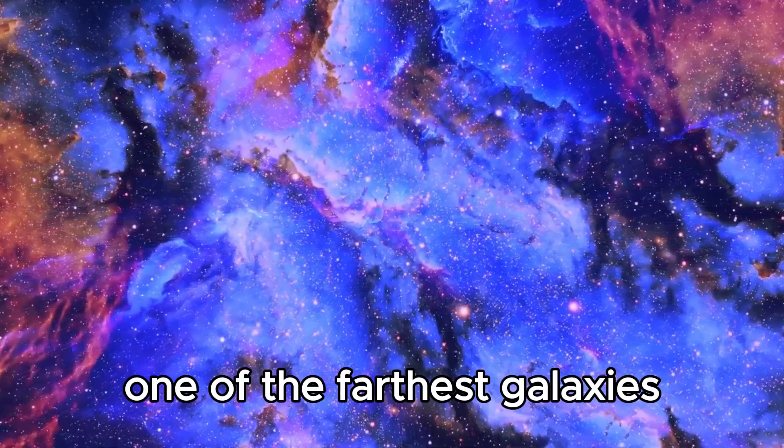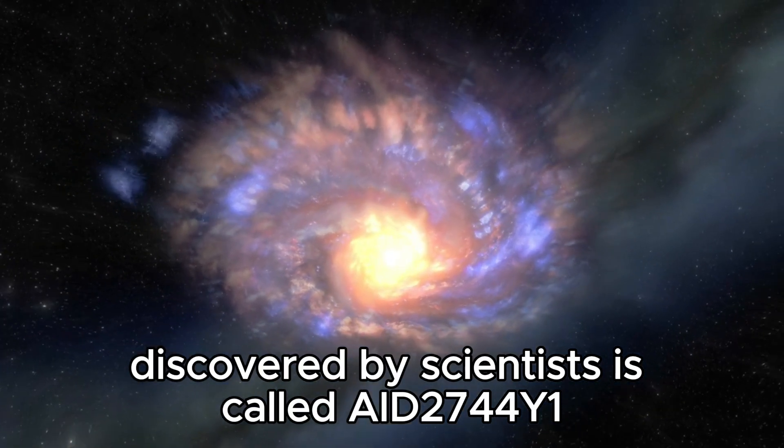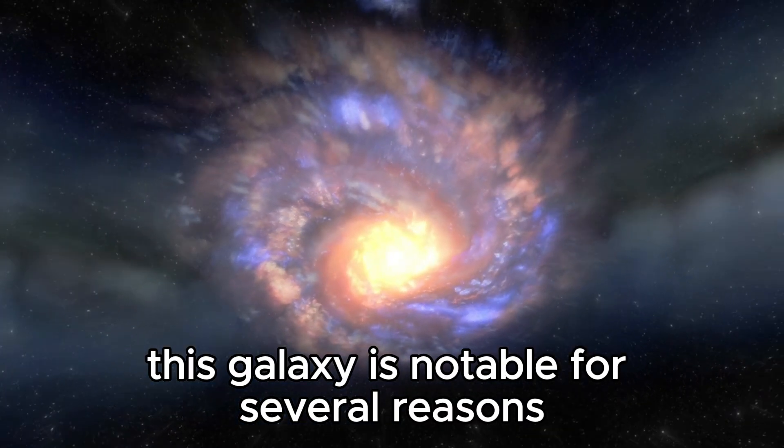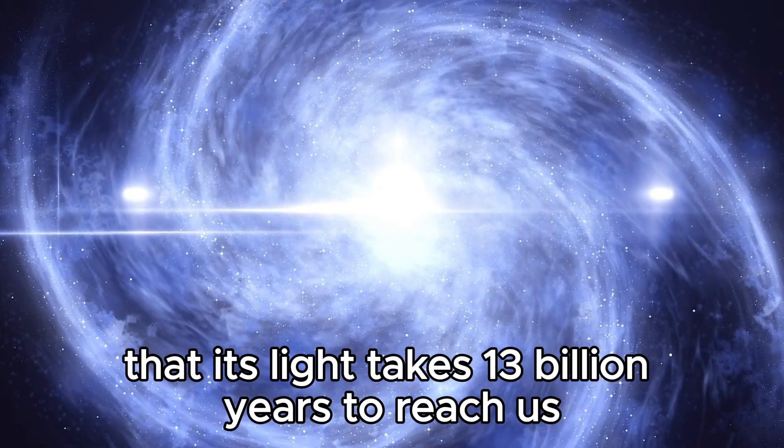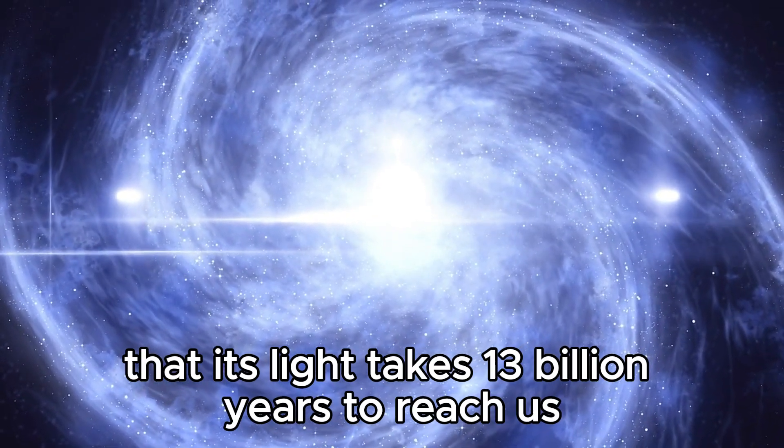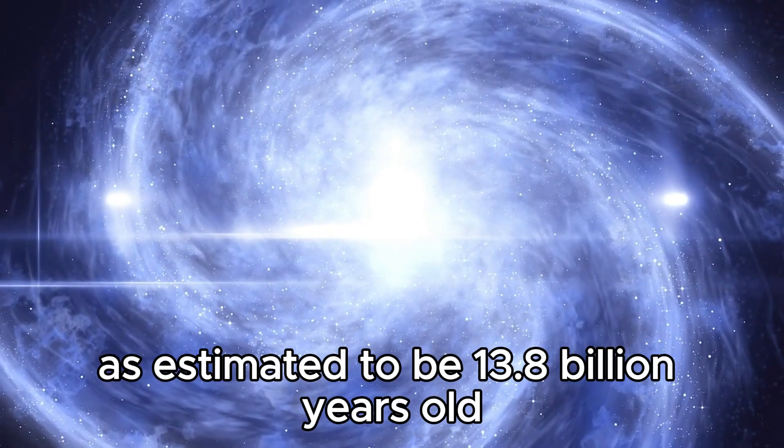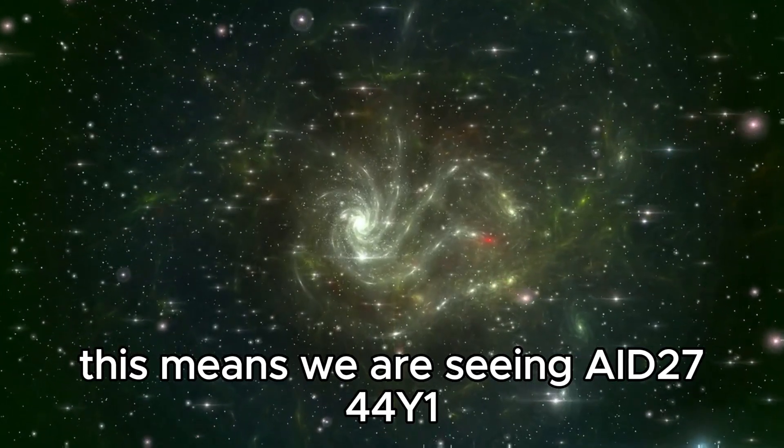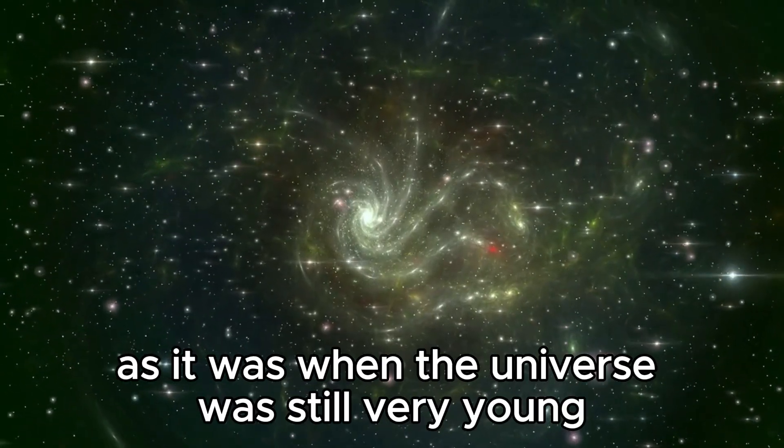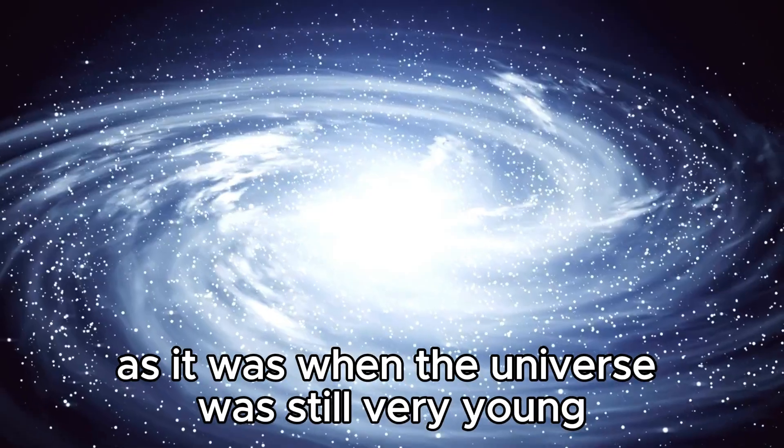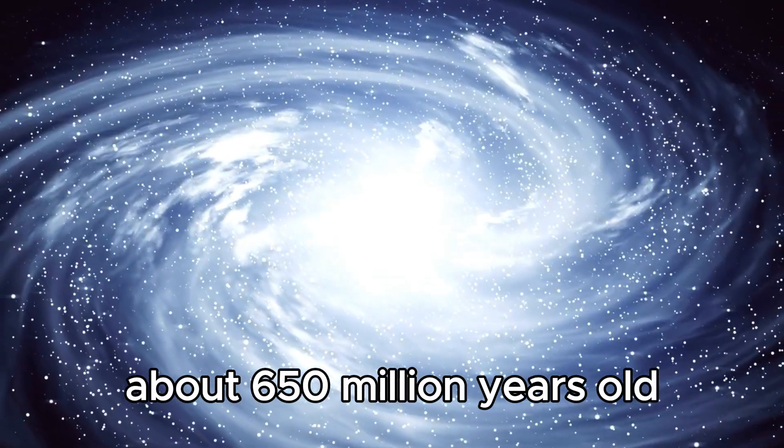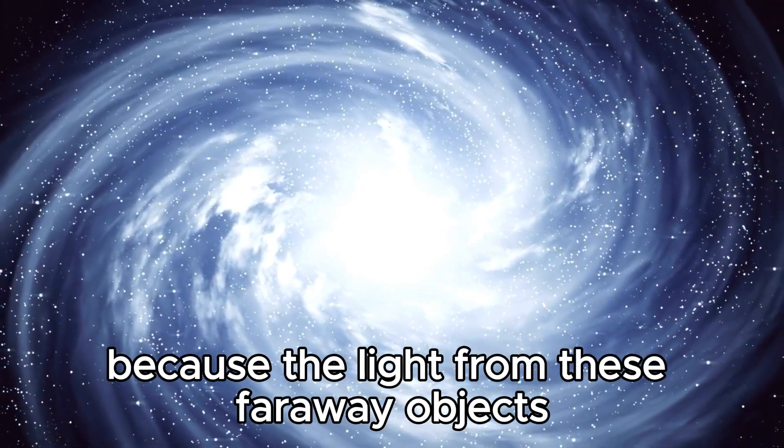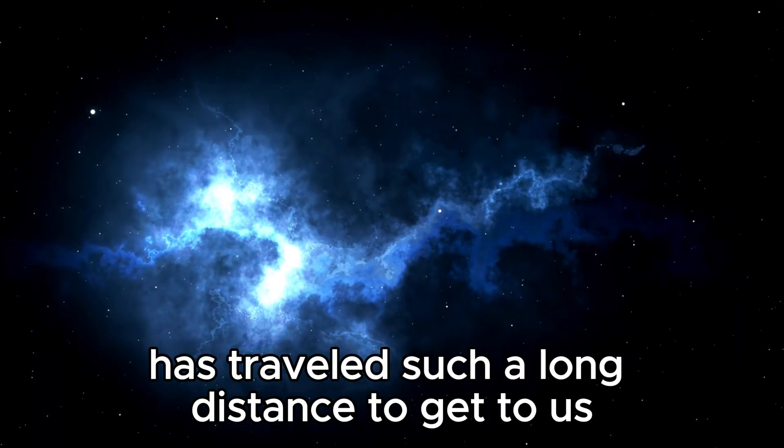One of the farthest galaxies discovered by scientists is called A2744Y1. This galaxy is notable for several reasons. It is so far away that its light takes 13 billion years to reach us. Considering the universe is estimated to be 13.8 billion years old, this means we are seeing A2744Y1 as it was when the universe was still very young, about 650 million years old. This happens with all distant objects in space because the light from these faraway objects has traveled such a long distance to get to us.